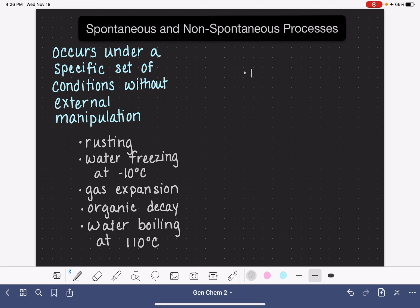An example of this would be water freezing at a higher temperature than what we would normally expect. Water freezing at, let's say, 30 degrees Celsius. The freezing point of water is 0 degrees Celsius.